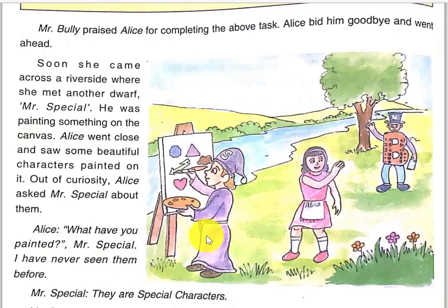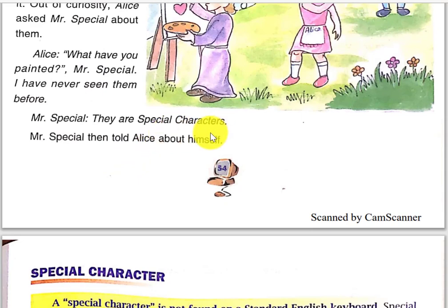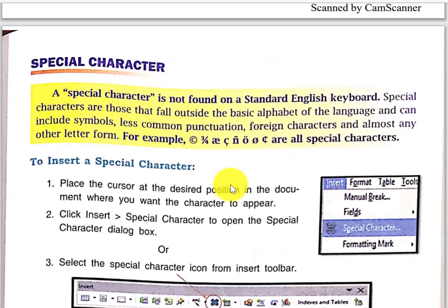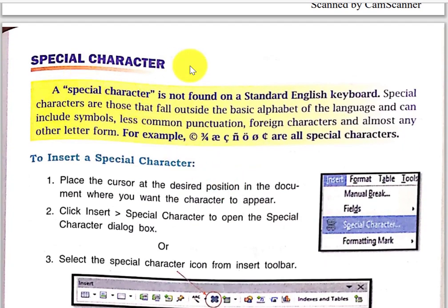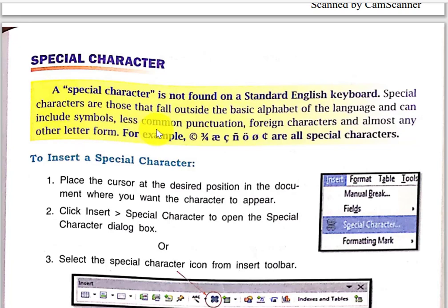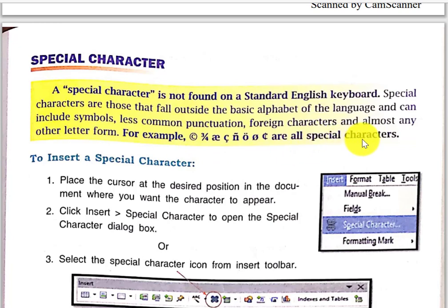Alice said she had never seen them before. Mr. Special said they are special characters. A special character is not found on a standard English keyboard. Special characters are those that fall outside the basic alphabet of the language and can include symbols, less common punctuation, foreign characters, and almost any other letter form. Examples include the copyright symbol, fractions, and other special characters.